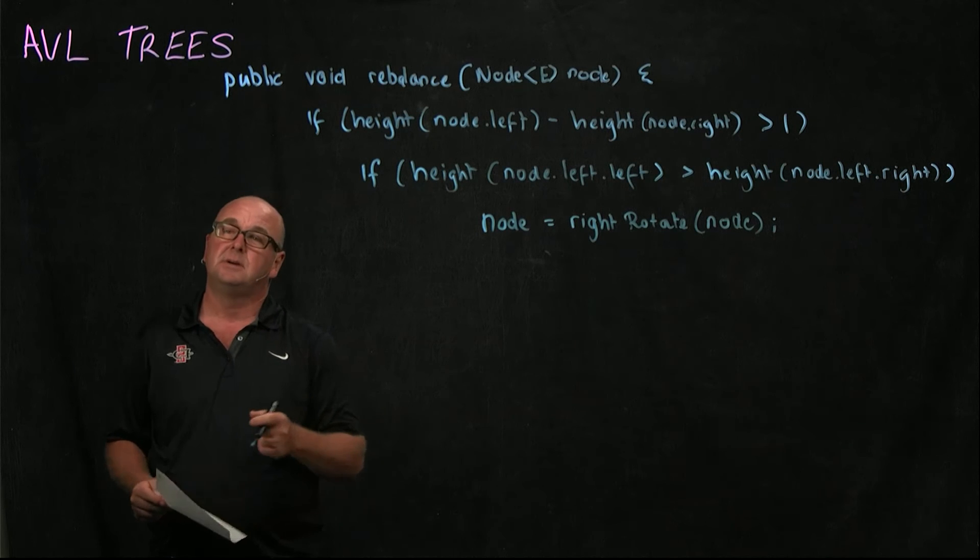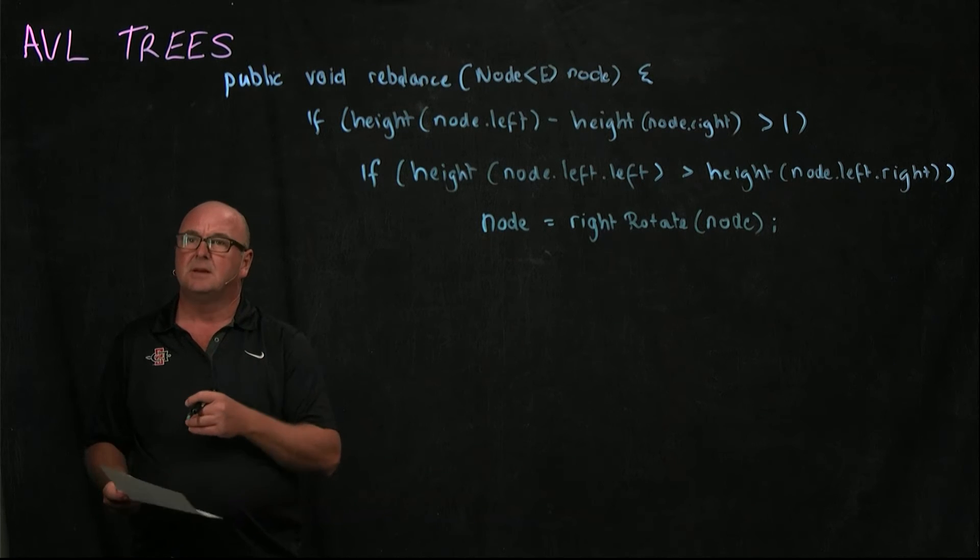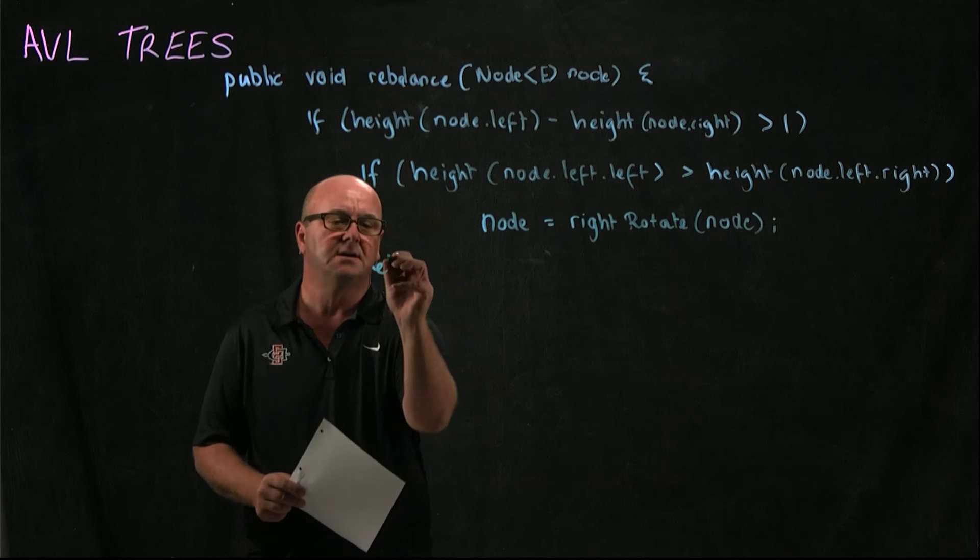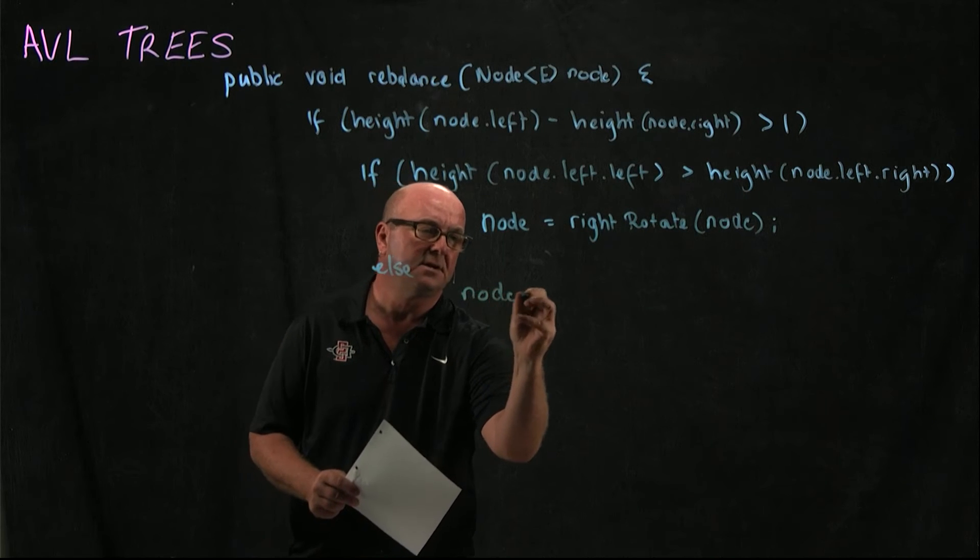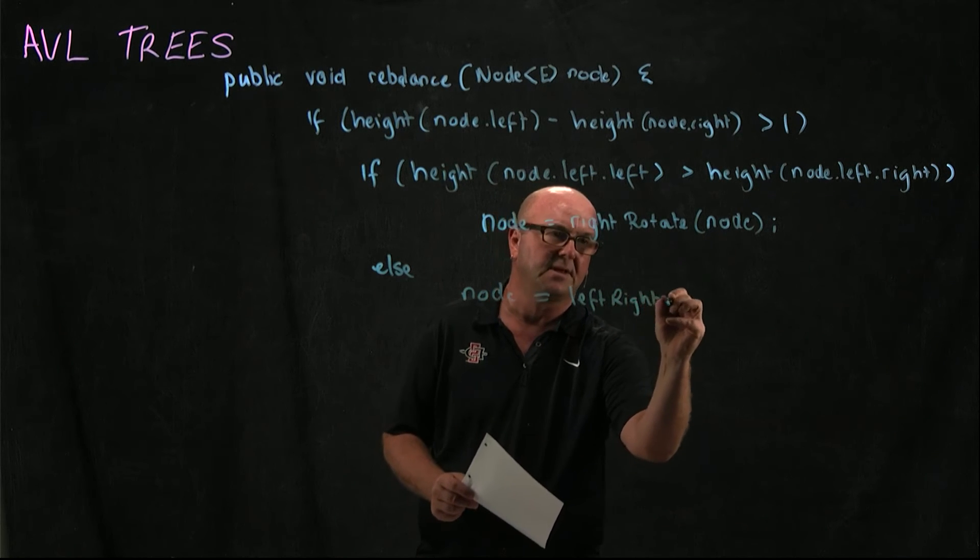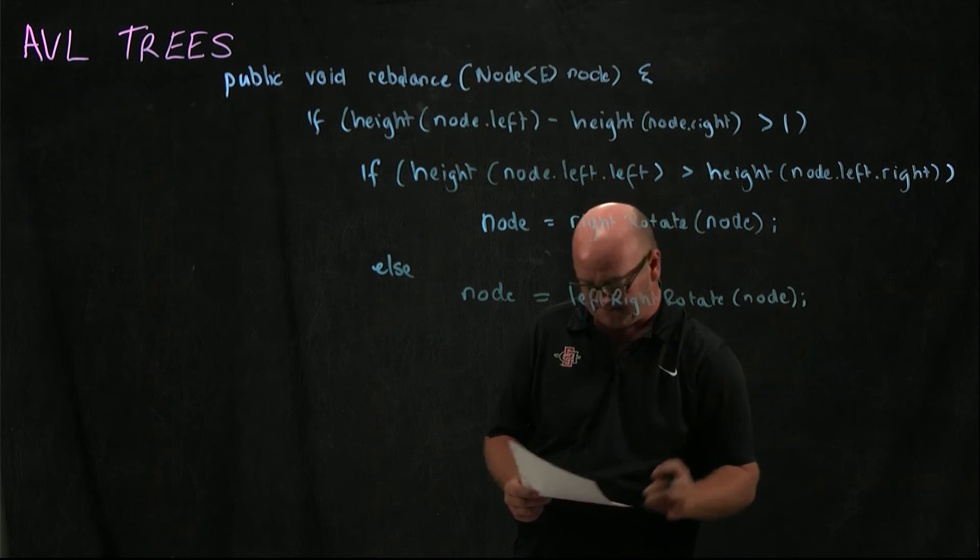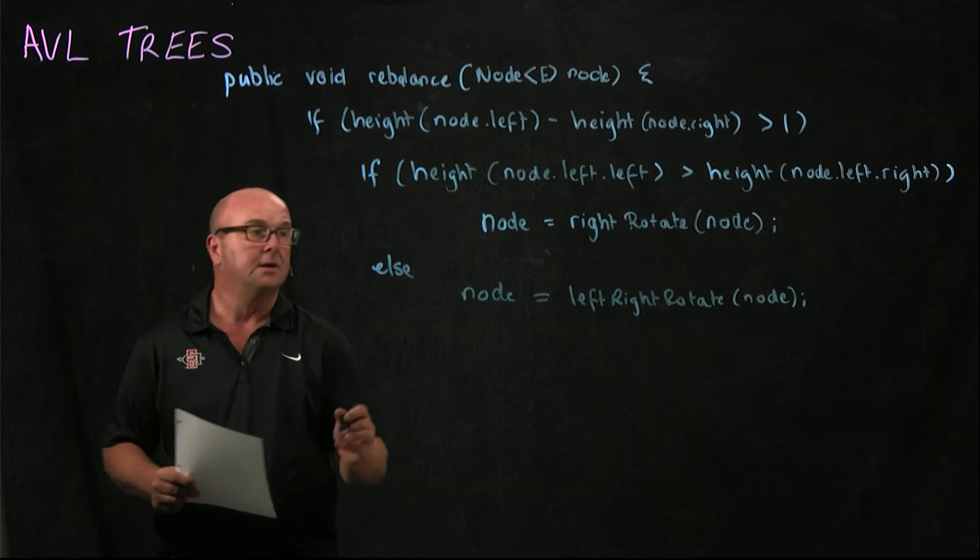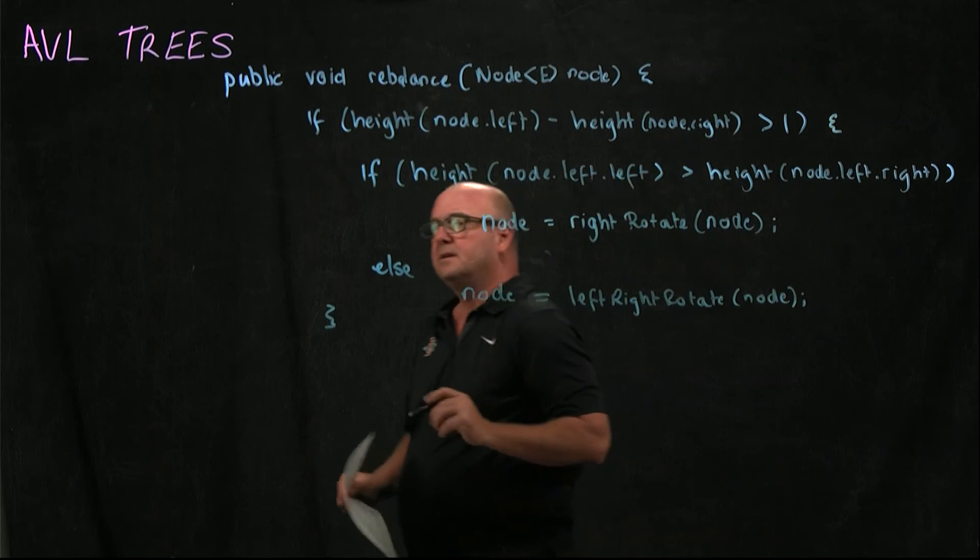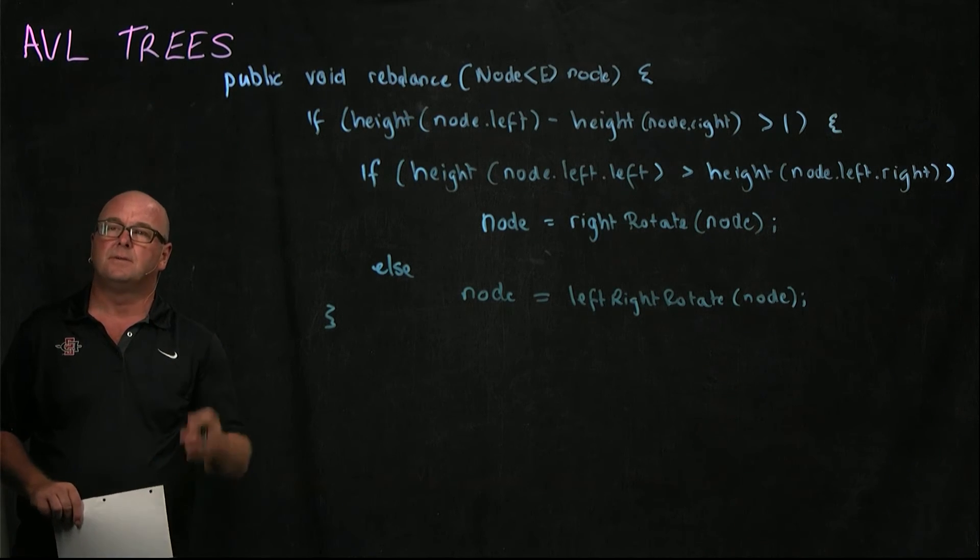If that's not true, then the left child's right subtree is bigger than the left child's left subtree. And so we need to do a left right rotate. So otherwise, node is equal to left right rotate of node. So this is our check balance method working on the left subtree of the node.